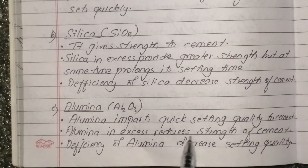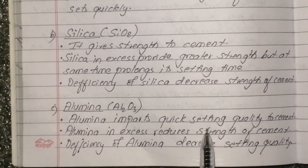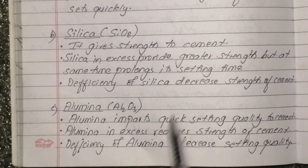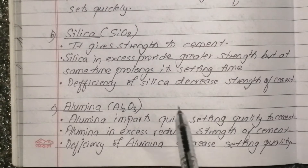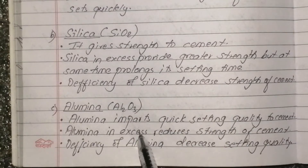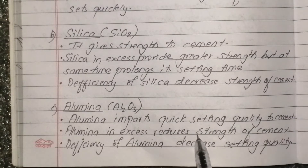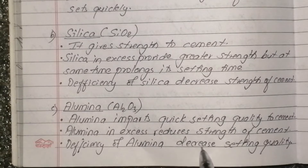Alumina impacts the quick setting time of cement - it promotes quick setting. However, if moisture or water pressure is present in excess, it reduces the strength. Alumina will decrease the setting time of cement.